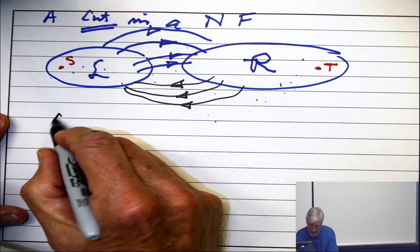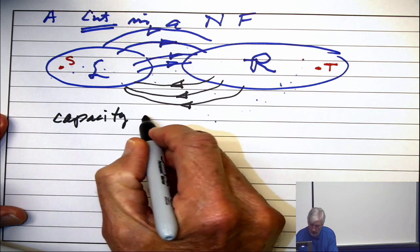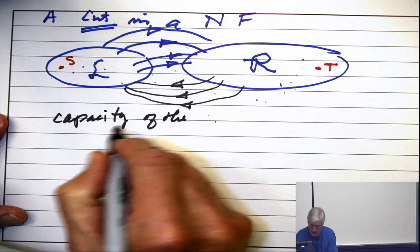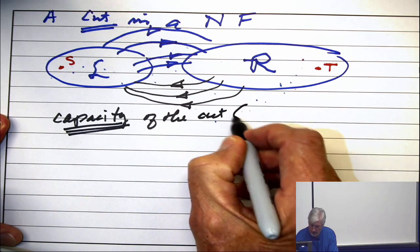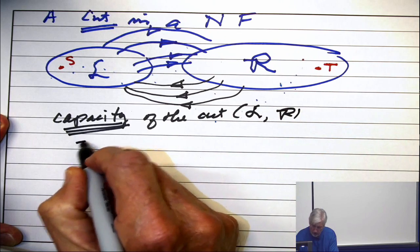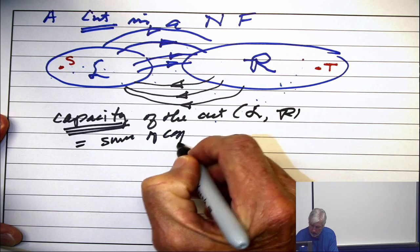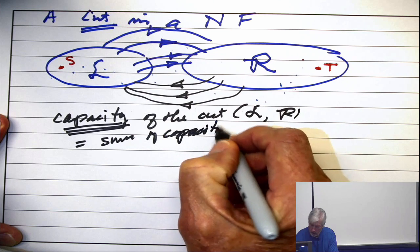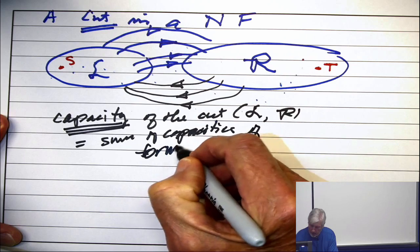The capacity of the cut, we're defining the word capacity of the cut L, R, is the sum of the capacities of the forward edges.